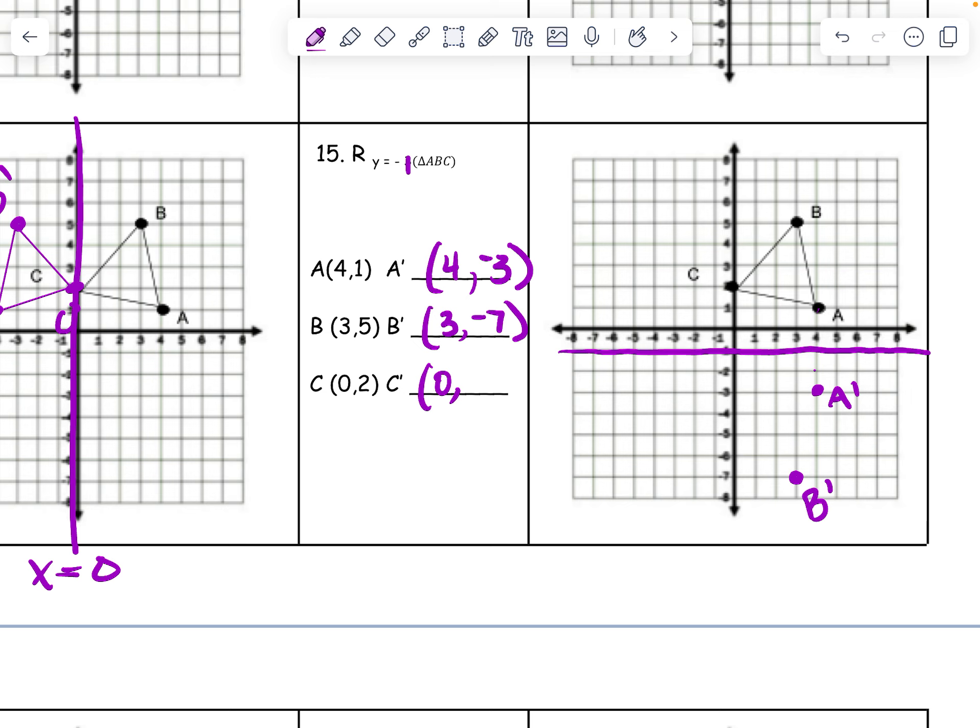And let's see, c prime is 1, 2, 3 away. So I got 1, 2, 3 more. c is at 0, negative 4.